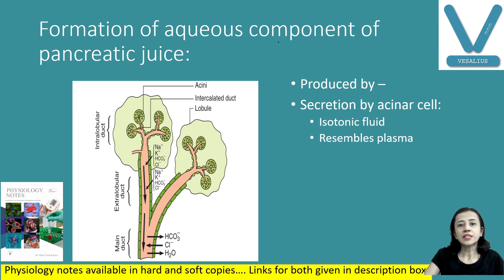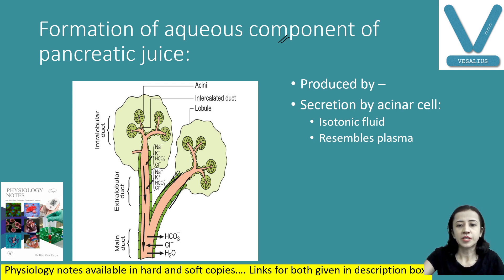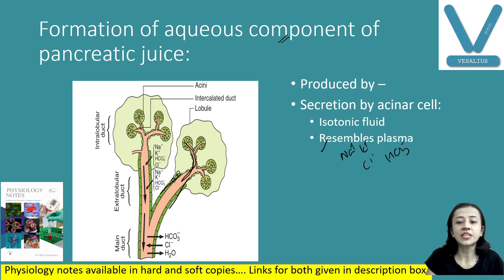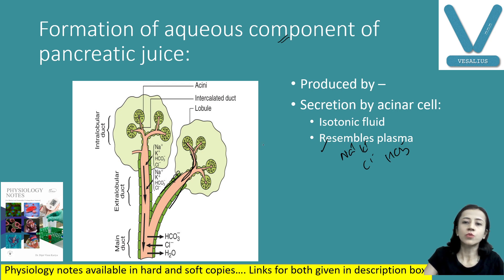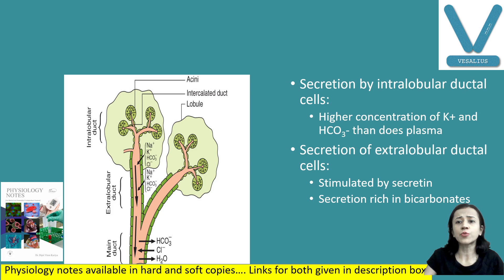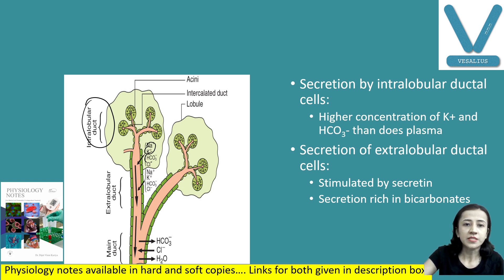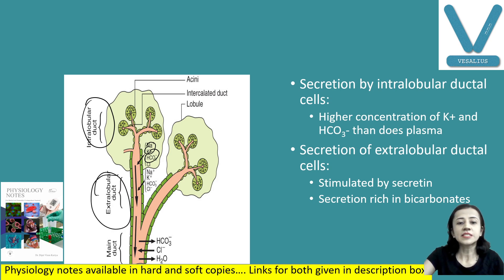The aqueous component of pancreatic juice is produced by the columnar epithelial cells lining the duct. Secretion by acinar cells is isotonic — similar tonicity to plasma — with sodium, potassium, chloride, and bicarbonate. The secretion is affected by various hormones and nervous stimuli. Hormones include cholecystokinin, which acts on acinar cells for enzyme secretion. The intralobular ductal cells have higher concentrations of potassium and bicarbonate ions. Secretion from the extralobular duct is stimulated mainly by secretin and is rich in bicarbonate ions.